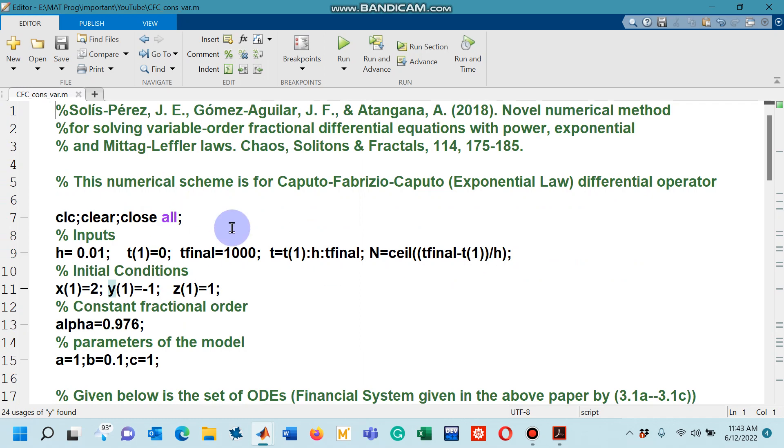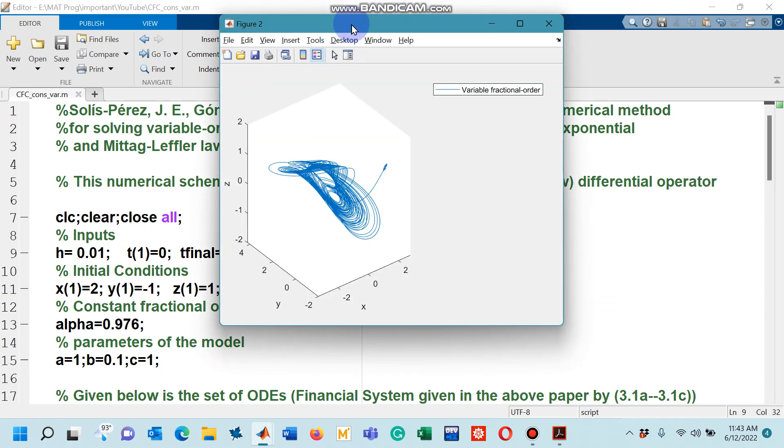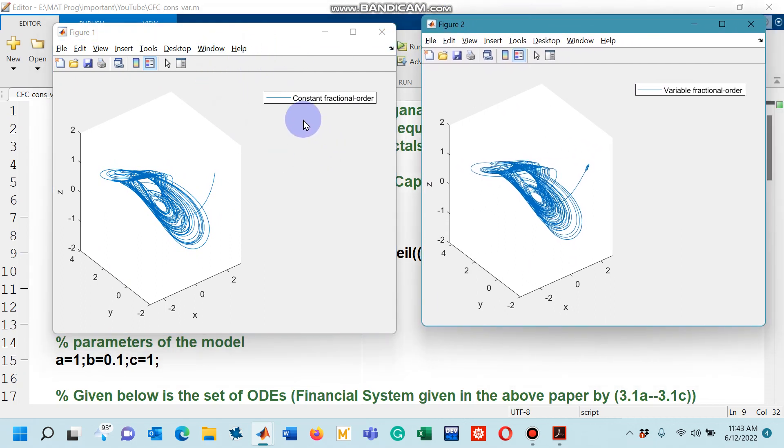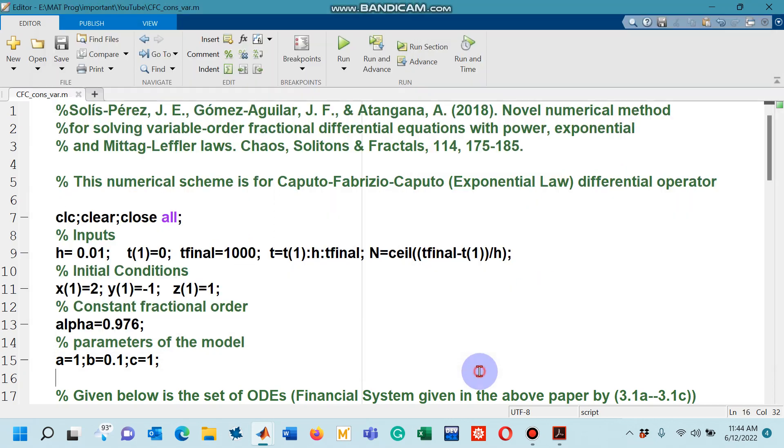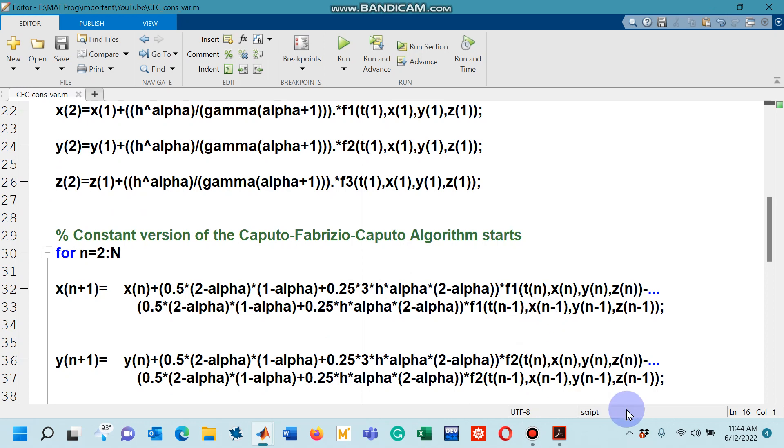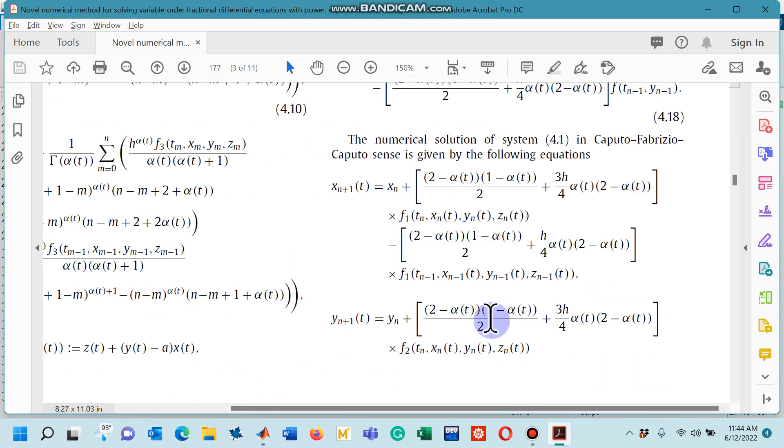At the end, you have to see the figure, the surface for this variable version of the Caputo Fabrizio algorithm. Let's run the program now. I have taken the interval 0 to 1000. After I run the program, I will have these two pictures side by side. The figure 1 for constant fractional order and figure 2 for the variable fractional order. Now, the important point that I would like to highlight here that I said at the start of the lecture is that you noticed how quickly we got these figures. And another thing that I want you to notice that in the algorithm of the Caputo Fabrizio, we do not have any summation sign. You can notice from the numerical algorithm as well. And this is the reason why we are getting the figure so quickly.